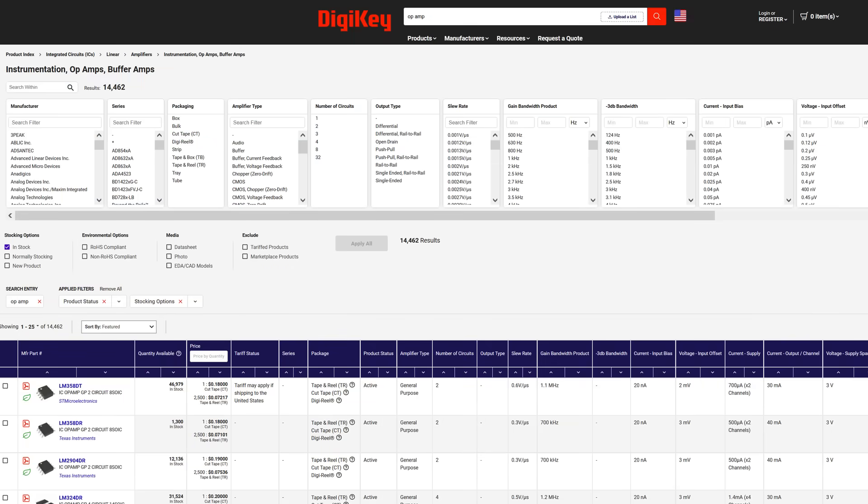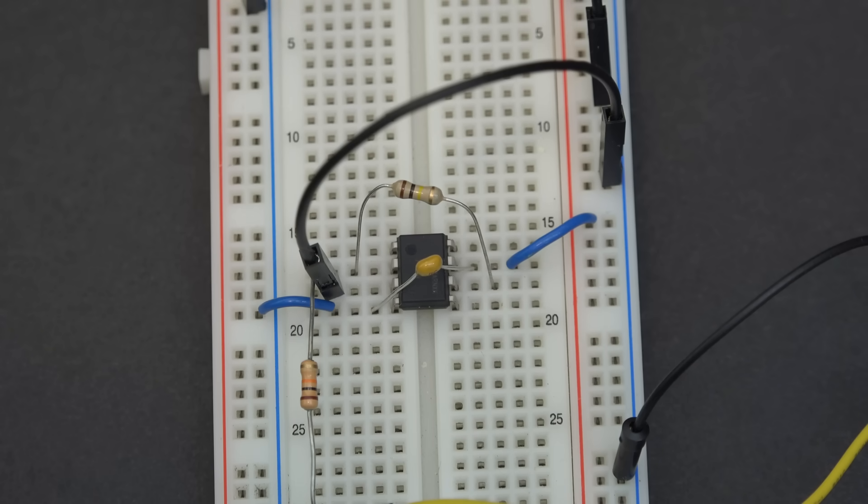There are thousands of different op-amps to choose from, and if you're actually serious about analog electronics engineering, you're going to have to spend a lot of time on Digikey seeing what's out there. YouTube and textbooks are not a substitute for sitting down on a bench and experimenting.